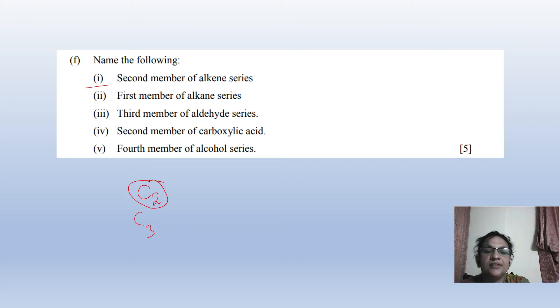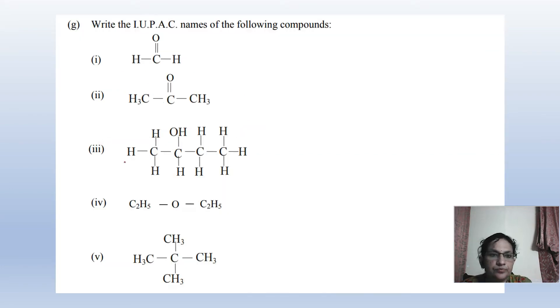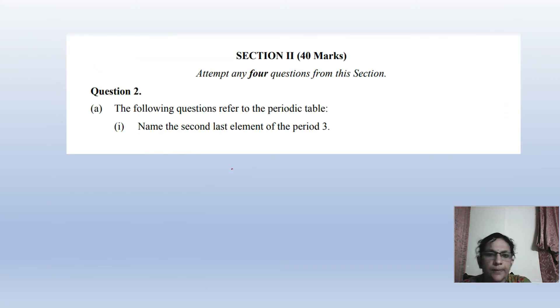The trick of CBSE and ICSE is they ask the 3rd member of carbon to confuse you. Here you can see all members are being asked and I will explain all the answers. You will learn the names of all compounds - when you do IUPAC naming, it will be very easy. This was Section 1 which was mandatory. Now Section 2 is 40 marks with only 4 questions, but there are big questions.